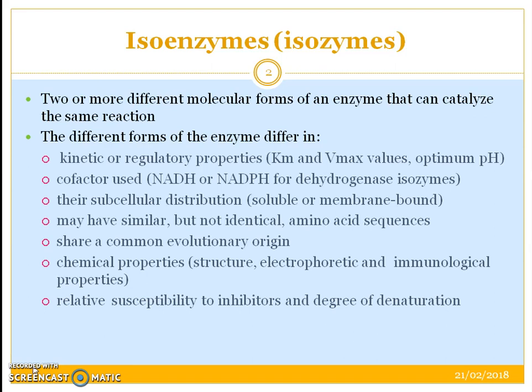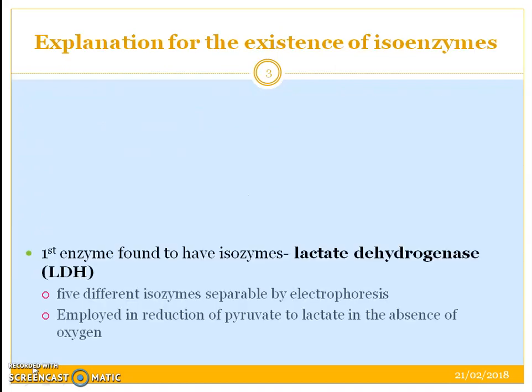They may have similar but not identical amino acid sequences. The chemical properties — that is their structure, their electrophoretic mobilities, their immunological properties, susceptibility to inhibitors, and their degree of denaturation — will also differ.